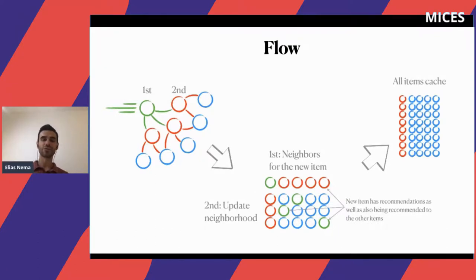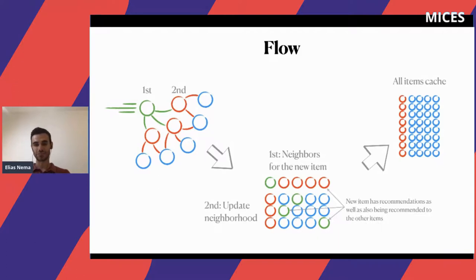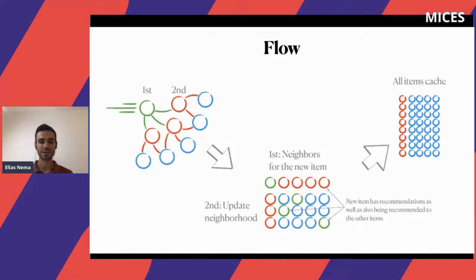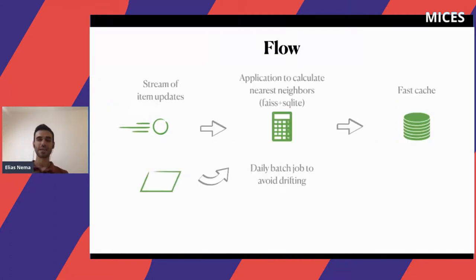We take those closest neighbors and update what we call the 'neighborhood.' Then we recalculate the similar items for those neighbors as well. You can see that the green item gets the new item's recommendations, but also the green item starts being recommended to some old items on the platform. We then store all of these items in a fast cache which we can quickly access.